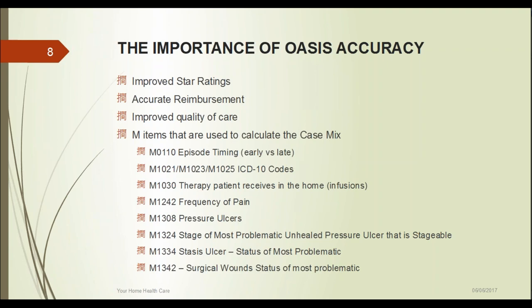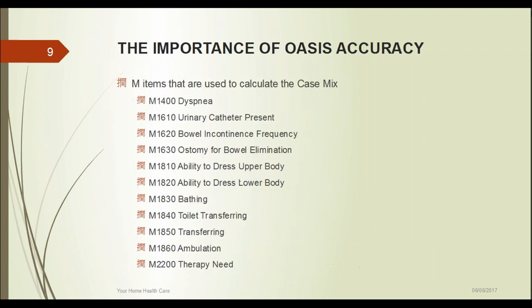M1030 covers therapy the patient receives in the home — infusions that impact reimbursement. Pain, types of wounds including pressure ulcers and their stage, stasis ulcers, surgical wounds, shortness of breath, catheter use, incontinence, and the patient's ability to dress and perform all ADLs — bathing, transferring, toilet transferring, ambulation — all impact reimbursement. Whether or not they need therapies also factors in.